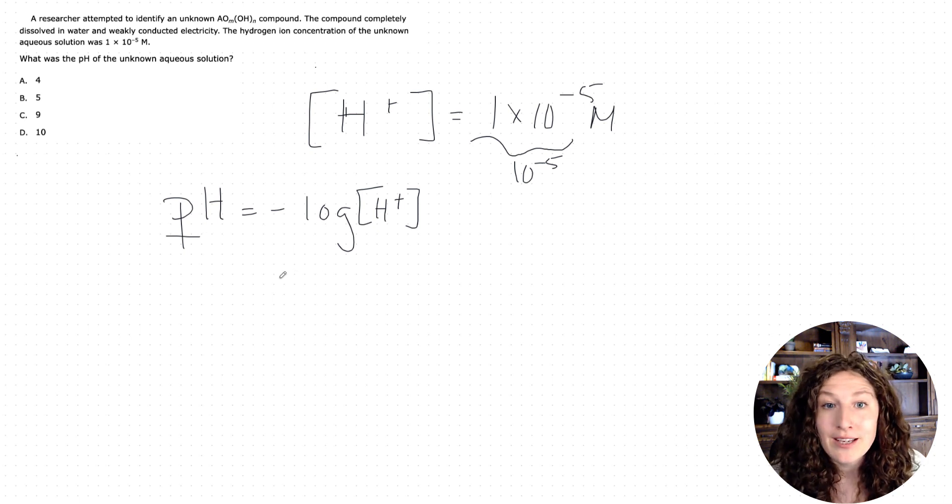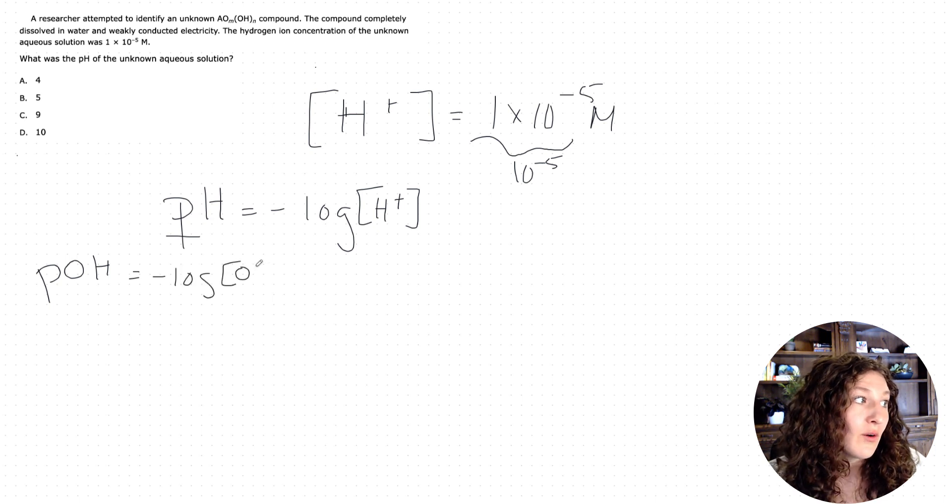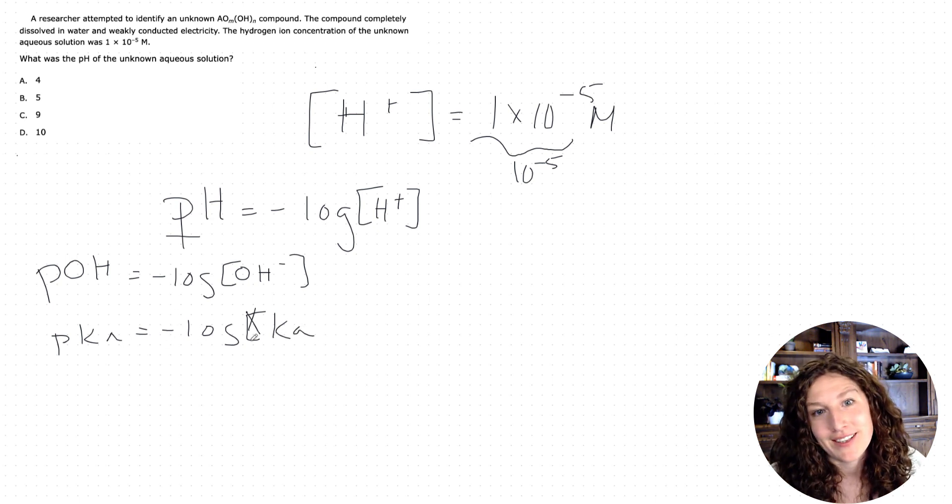By the way, lowercase p usually means log of. So this log of H+ concentration, pOH is quite simply the negative log of the OH concentration. pKa, negative log of the Ka. Oh, it's not a concentration, sorry. Ka. So little p just means log of, just to reference there.